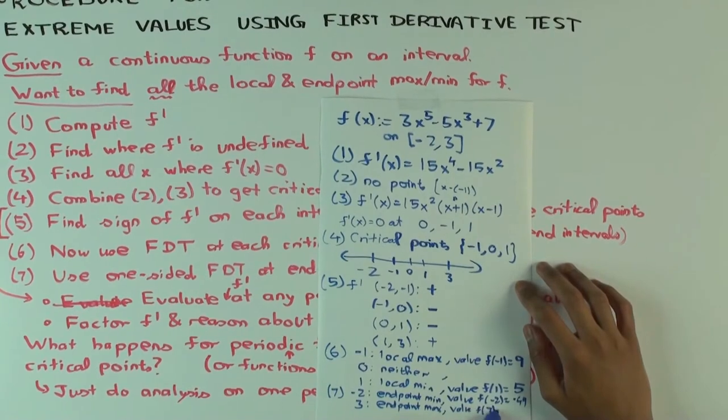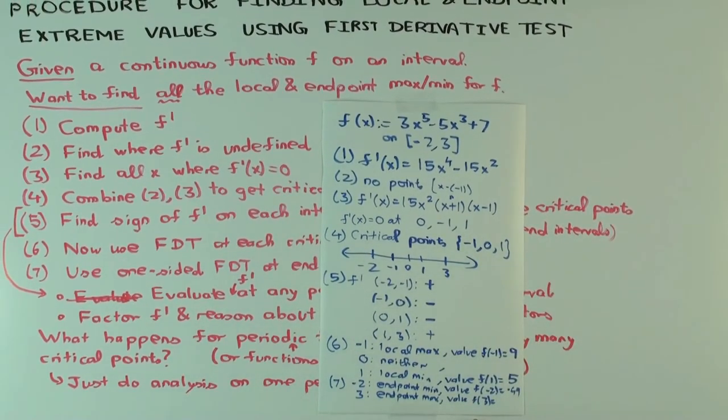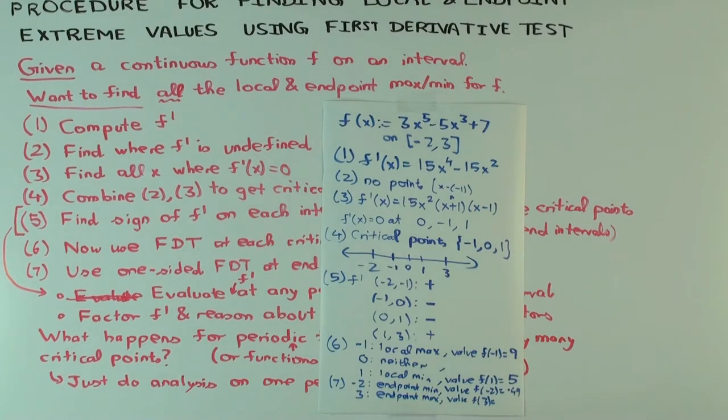And the value is what? It's 729 minus 135, which is 594 plus 7. I think it's 601. You know how to do this arithmetic, so I think it's 601.